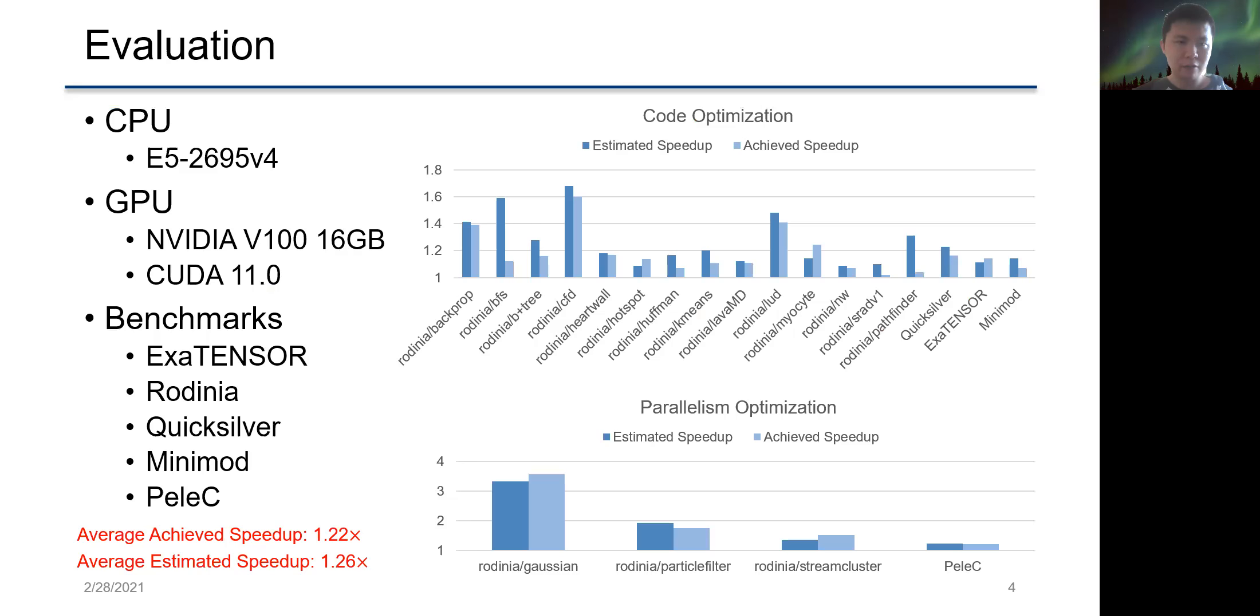We have evaluated GPA on a platform with an Intel CPU and the NVIDIA V100 GPU using CUDA 11.0. We have applied GPA on a wide range of benchmarks and applications including ExaTENSOR, Rodinia GPU benchmark, Quicksilver, Minimod, and PeleC.